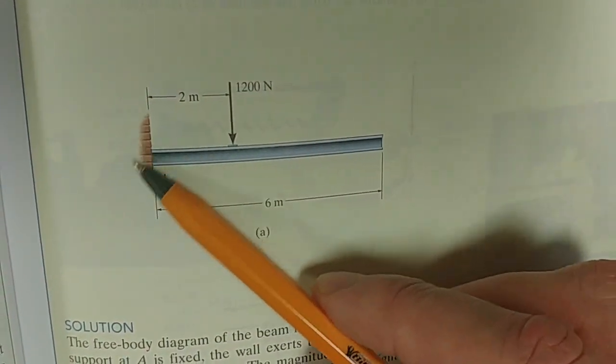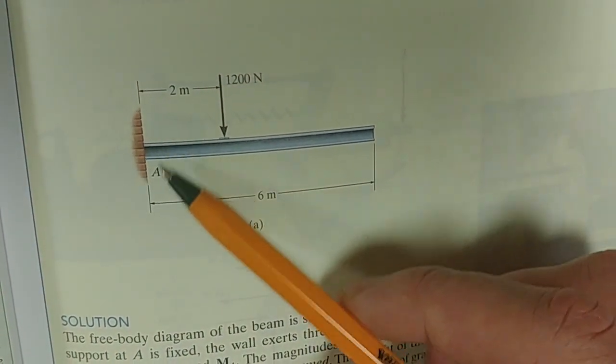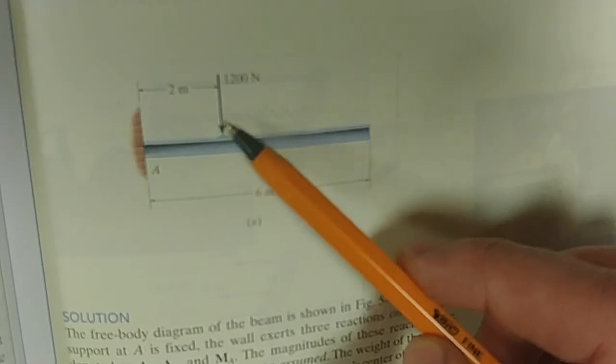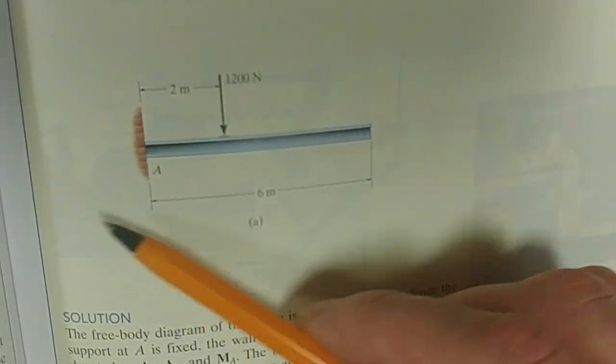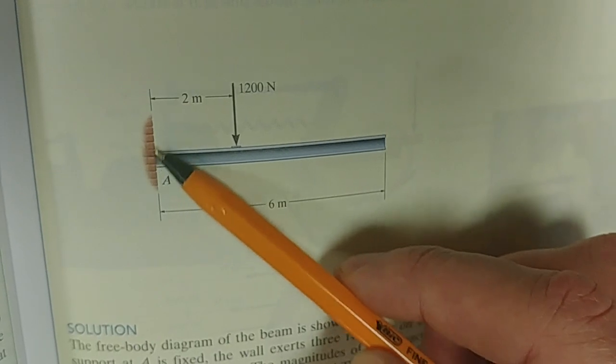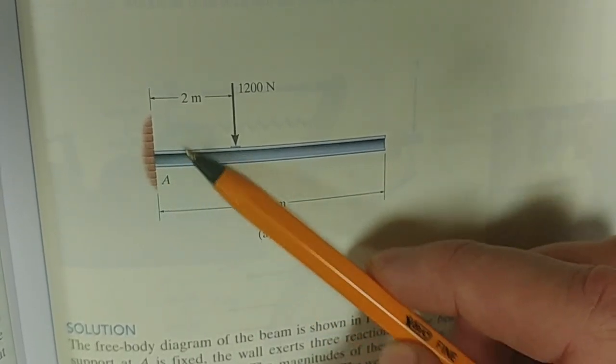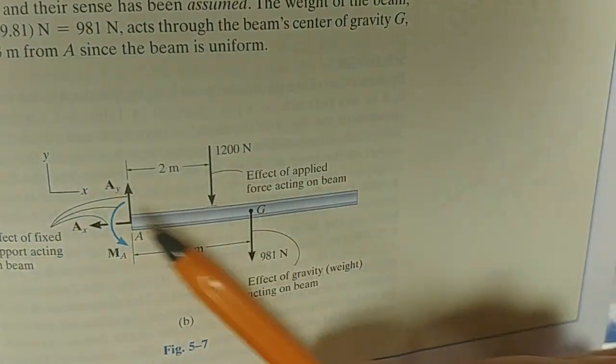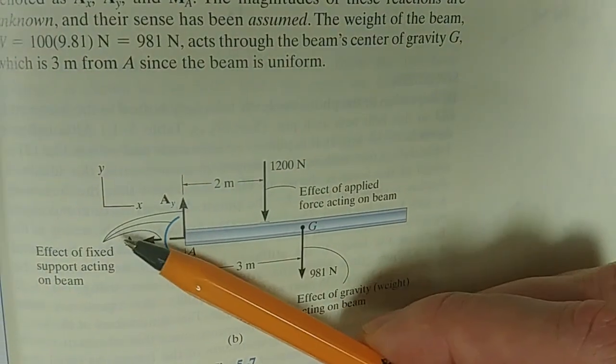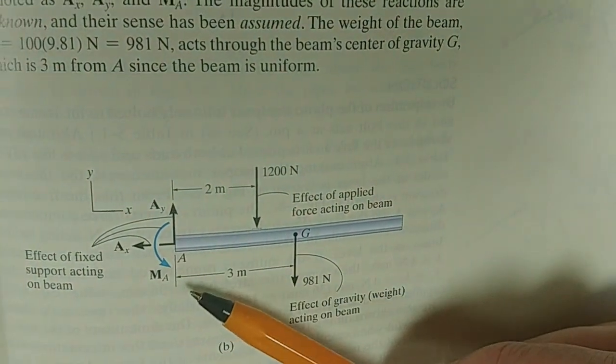Does this type of support reaction resist a moment? If I apply that 1200, it causes an applied moment. Does that type of reaction resist a moment? Yes, it does. Then I need to put in a moment. So, in my free body diagram, I've replaced that support reaction with an x force, a y force, and a moment.